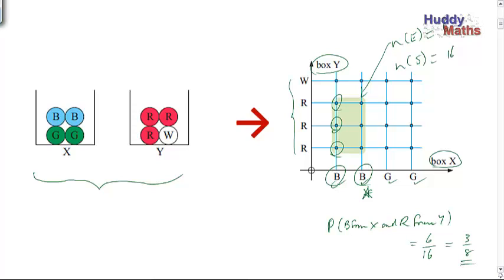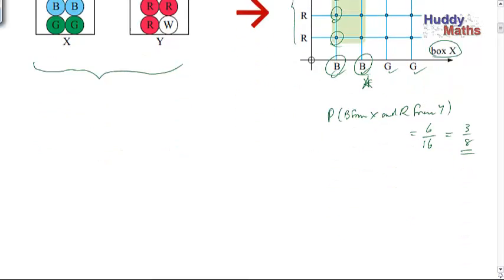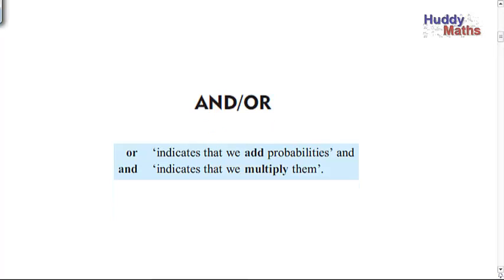Surely you don't have to draw diagrams for every probability calculation. Isn't there a more mathematical way? Let's look at the AND/OR rule. In this basic probability course I'm not going to prove this rule. OR indicates that we add probabilities, and AND indicates that we multiply them.